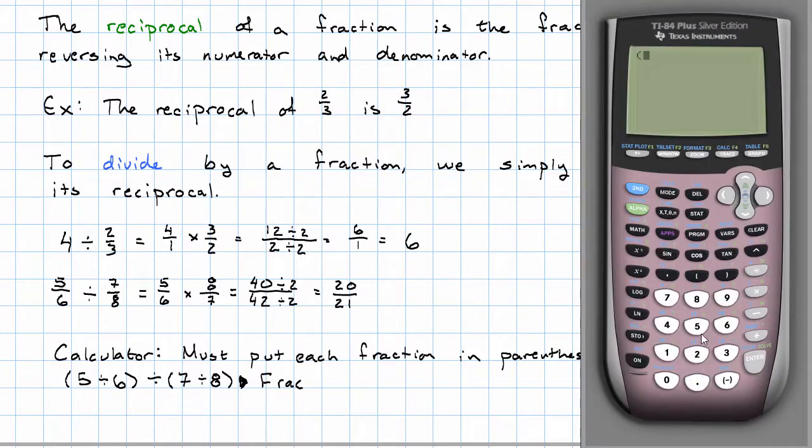We'll say five sixths divided by seven eighths. Hit the math button, choose frac, enter 20 21sts exactly the way we found by hand. And that's all there is to doing this calculation on the calculator. That's all there is to doing this calculation by hand as well. Let's go.